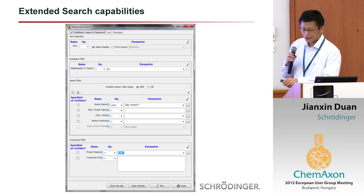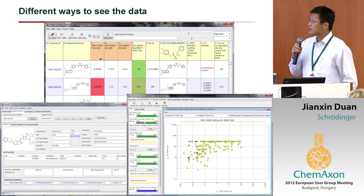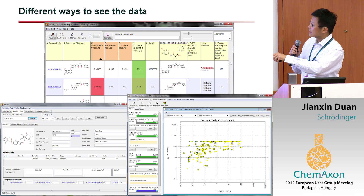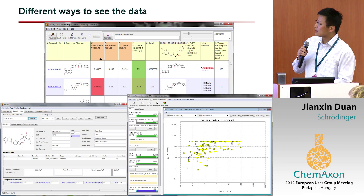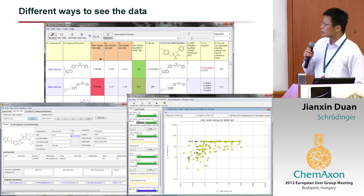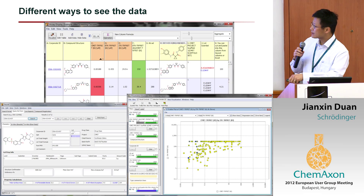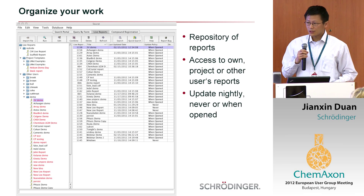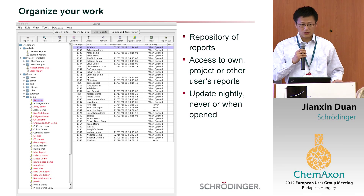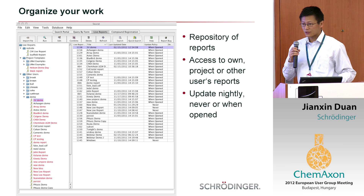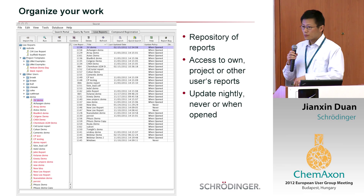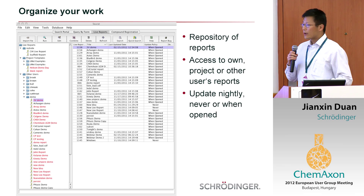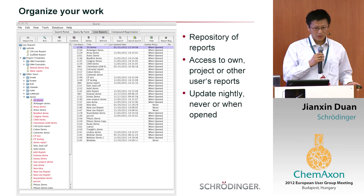There are also compound filters. Once you've done the search, there are different ways to visualize the data. One way is essentially the spreadsheet where you have the compounds and their properties including activities — you can color the cells and rank or sort in different orders. You can also visualize in form format or using different plots: scatter plots, box plots, et cetera. You can organize your work — for example, you can save searches and have a repository of different reports. You can access your own projects, your own reports, or your colleagues' reports, and these reports can be updated every night, whenever you open them, or at the time you generate them.